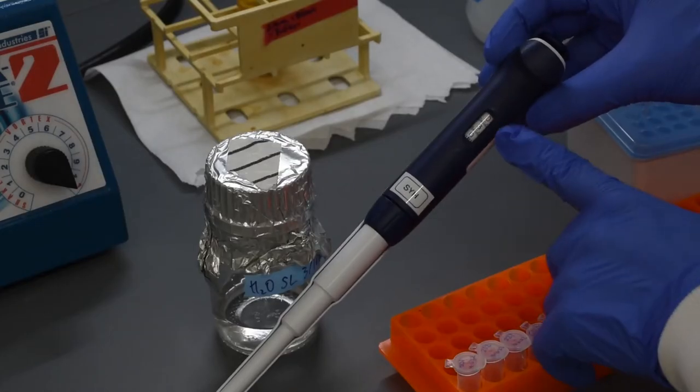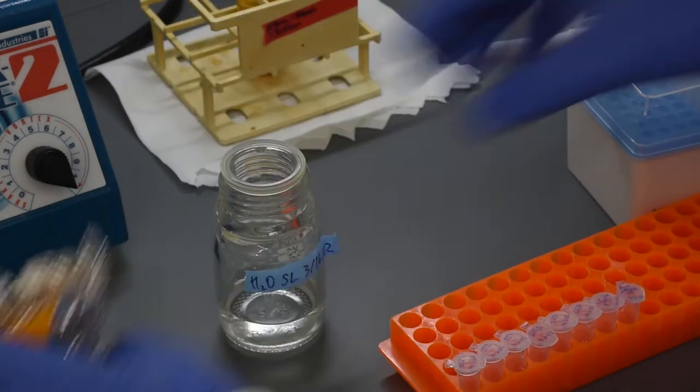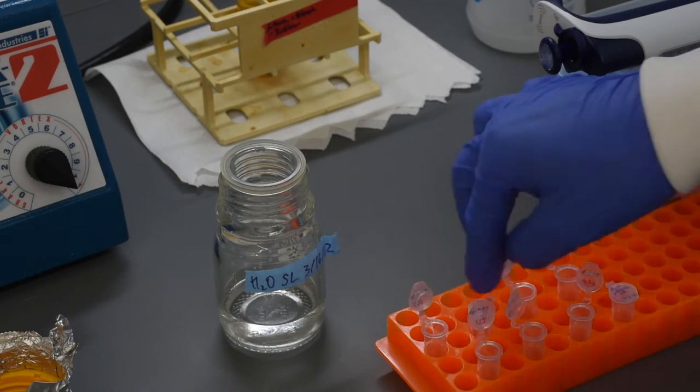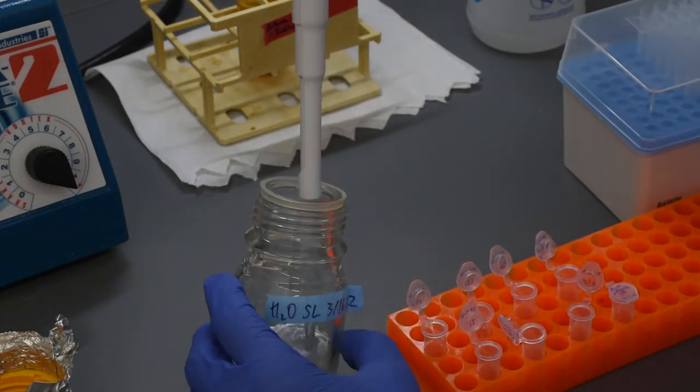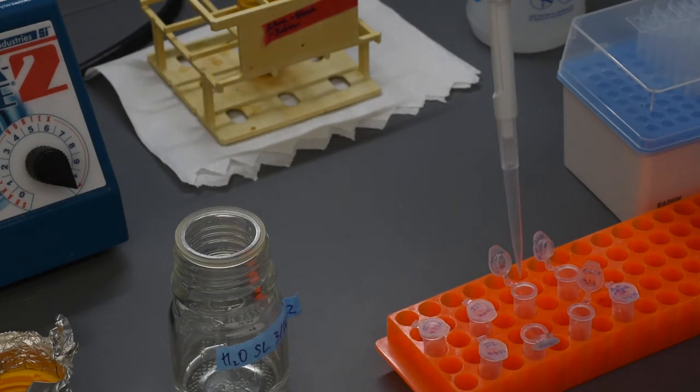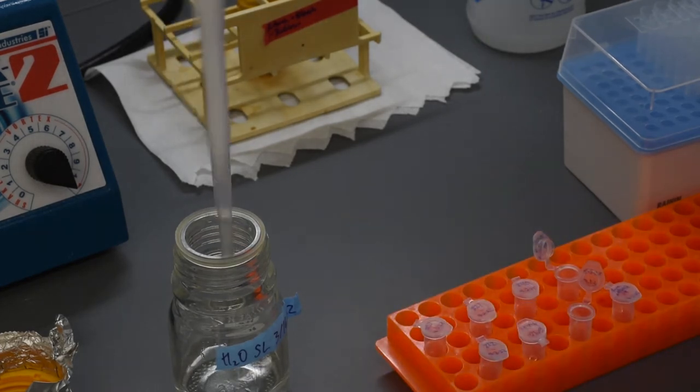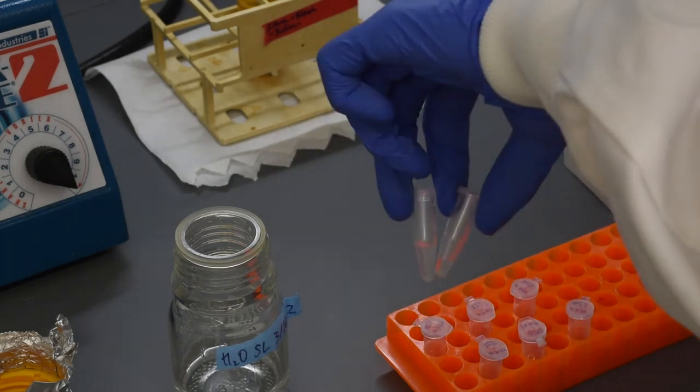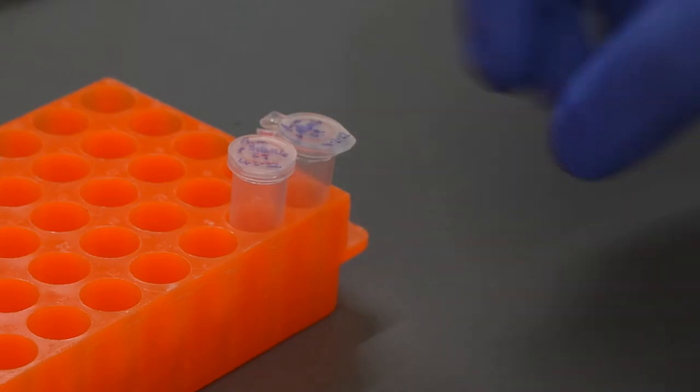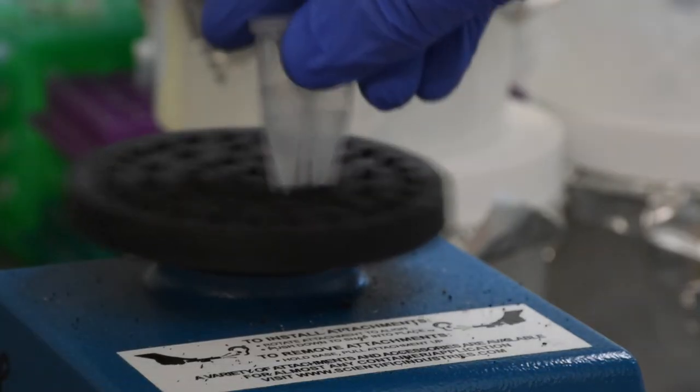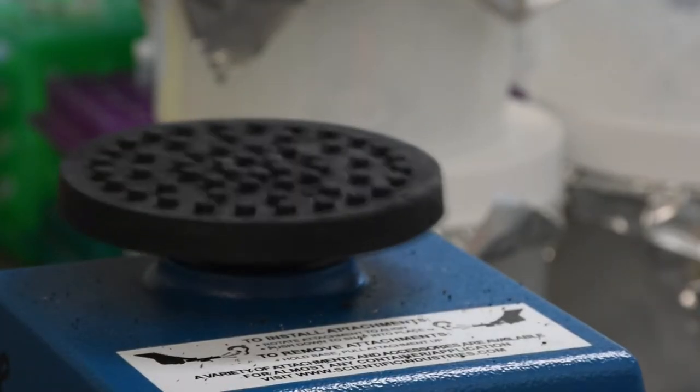Add 300 microliters of sterile water to each of the yeast tubes. Add 300 microliters total to the agro tubes, combining the cell pellet volumes to make a denser suspension. Vortex each tube to resuspend the cells.